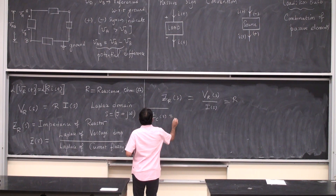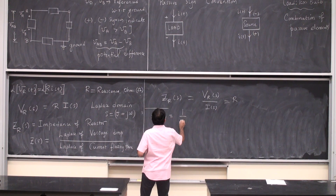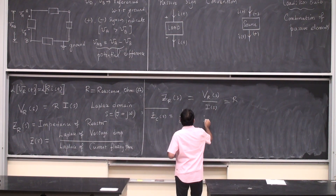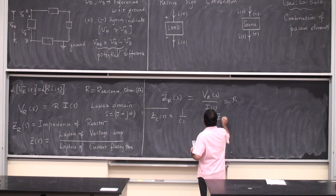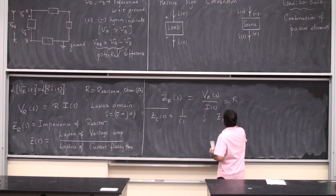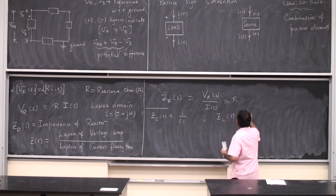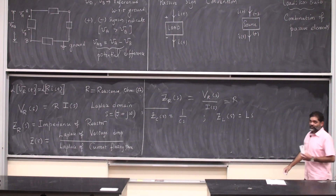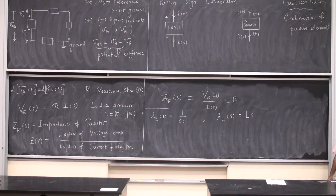The impedance of the capacitor element and the impedance of the inductor element — these are two other quantities that we are going to derive very quickly.